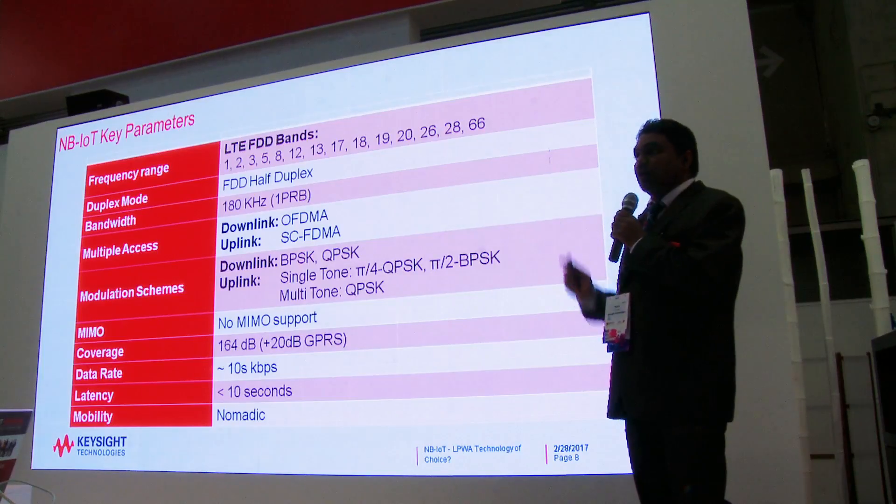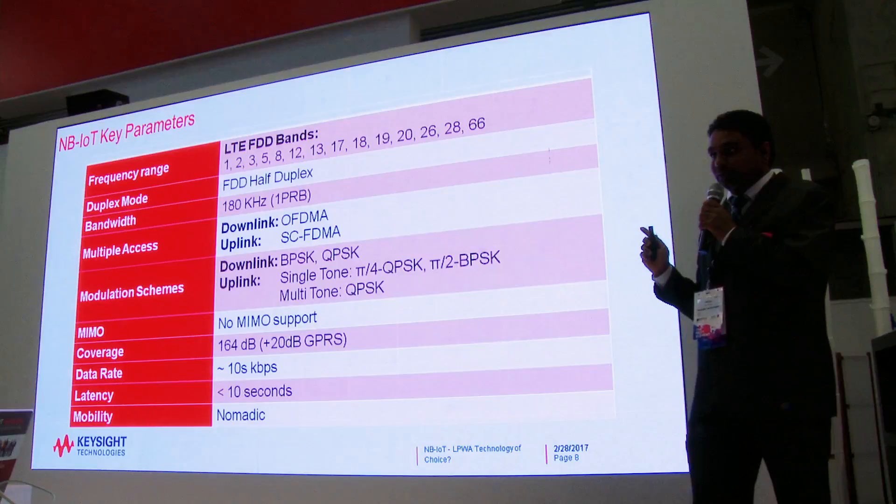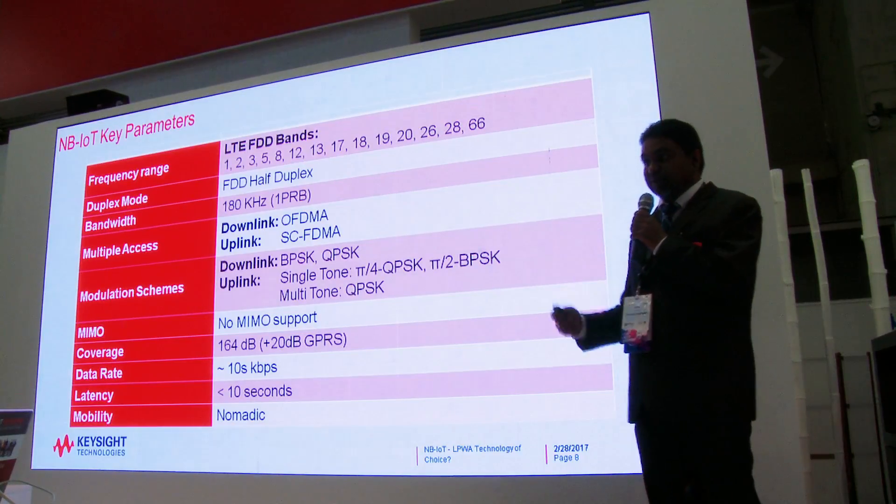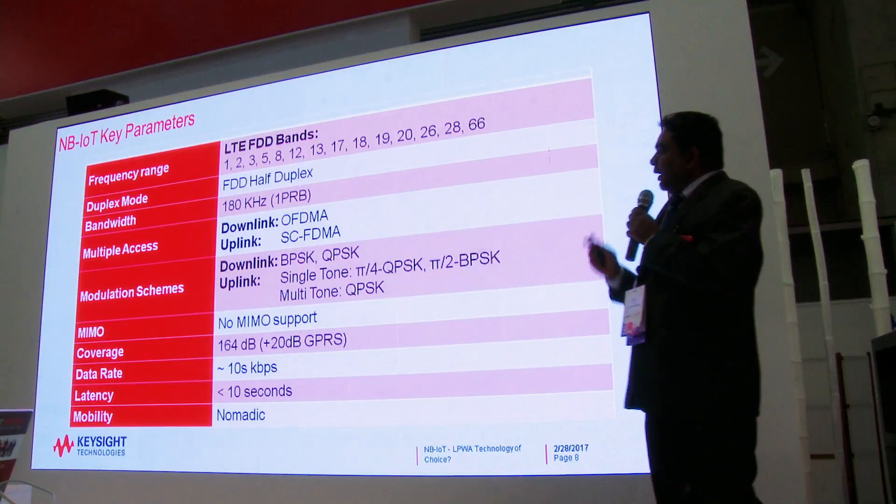One key difference in NB-IoT is that it uses half duplex mode, purely for cost reduction — avoiding the need for a duplexer, which is a very expensive component. Another key difference is that NB-IoT has one physical resource block with 180 kHz size, divided into 12 subcarriers of 15 kHz each. There is also an option to break this further into 48 subcarriers of 3.75 kHz, which is important for enabling capacity in areas with very poor coverage.